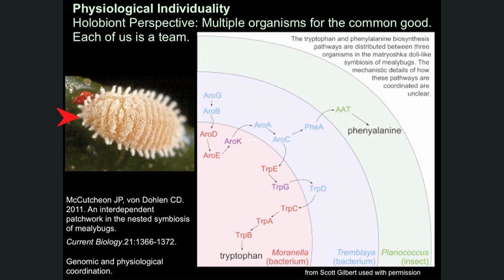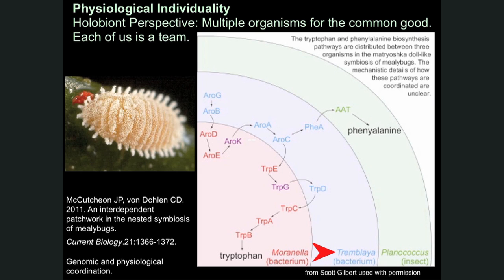Physiologic individuality. This is a little mealybug, Planococcus. One of the metabolites it needs is phenylalanine. And the phenylalanine is not produced by Planococcus, and it's not even produced by Tremblaya, which is a bacterial symbiont of Planococcus. It's actually produced by all three — including the symbiont of the symbiont of Planococcus. Here's the path of it being produced.